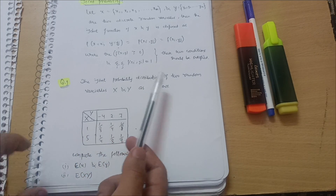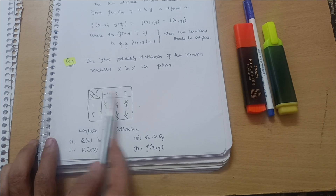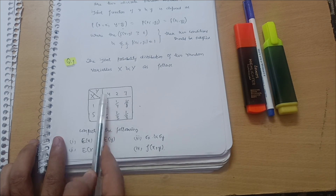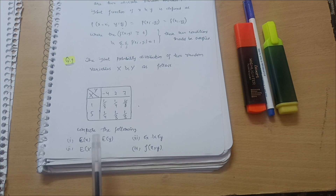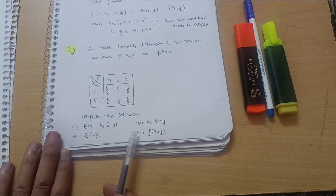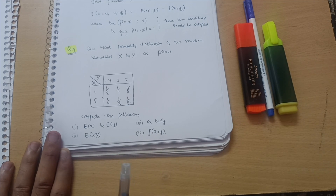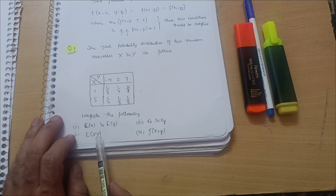Moving to the first question: the joint probability distribution of two random variables X and Y is given in a table. The table has X values as rows (x1, x2) and Y values as columns (y1, y2, y3) with corresponding probabilities. We have to compute: expectation of X, expectation of Y, variance σx, variance σy, and the correlation between X and Y.